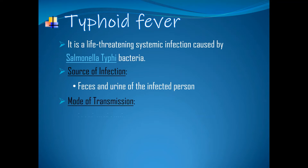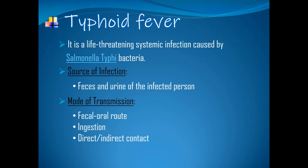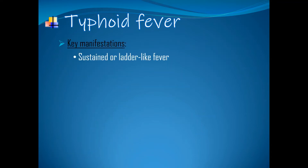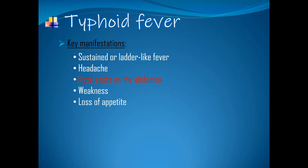Mode of transmission — fecal-oral route: ingestion of contaminated food or water, and direct and indirect contact with the infected person. Incubation period is one to two weeks. Key manifestations: sustained or ladder-like high fever, headache, rose spots on the abdomen, weakness, loss of appetite, and diarrhea or constipation.